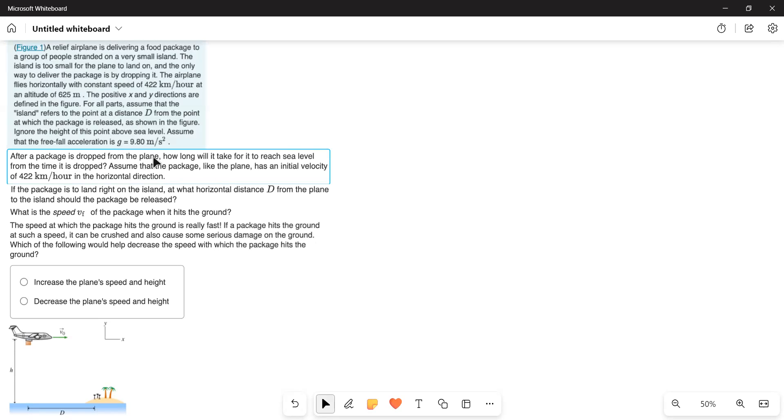After a package is dropped from the plane, how long will it take for it to reach sea level from the time it is dropped? Assume that the package, like the plane, has an initial velocity of 422 km per hour in the horizontal direction. If the package is to land right on the island, at what horizontal distance d from the plane to the island should the package be released? Third bit, what is the speed v_f of the package when it hits the ground?